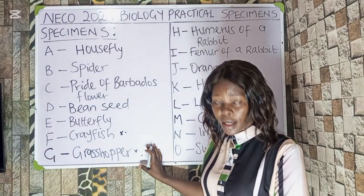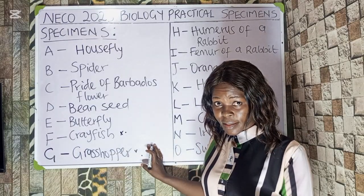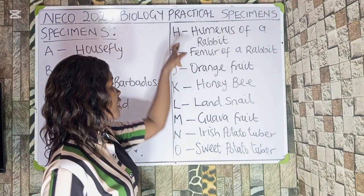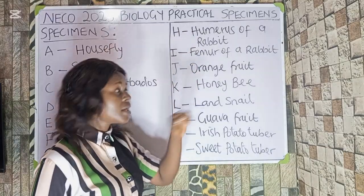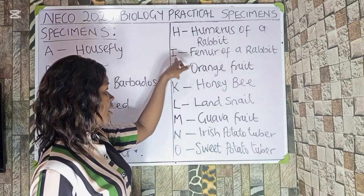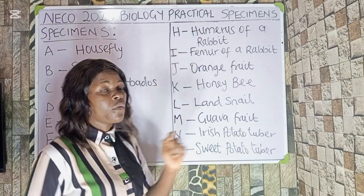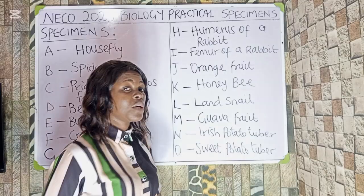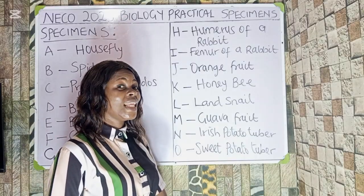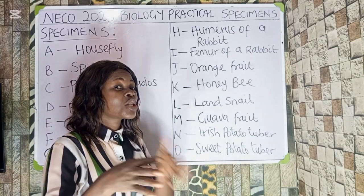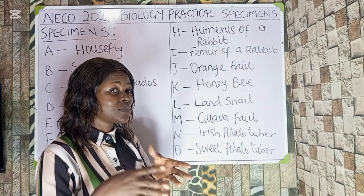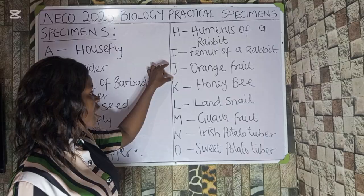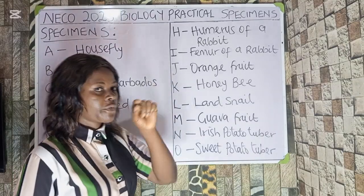Specimen H is the humerus of a rabbit while Specimen I is the femur of a rabbit. The humerus is for the hand (forelimb) while the femur is for the leg (hindlimb) — that is the relationship connecting them.